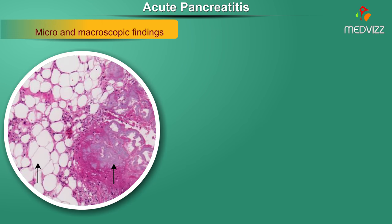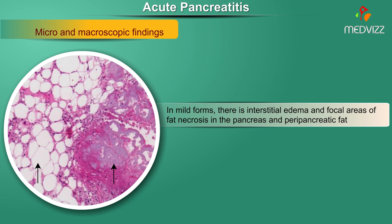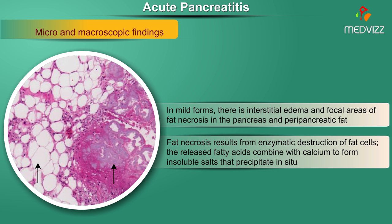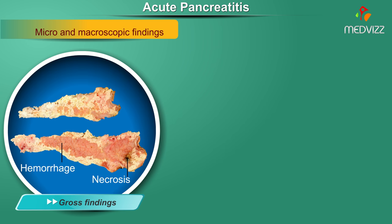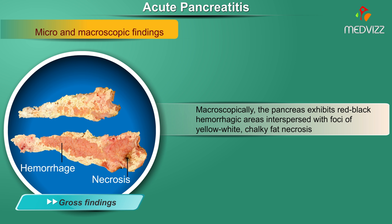Microscopically, in mild forms there is interstitial edema and focal areas of fat necrosis in the pancreas and peripancreatic fat. Fat necrosis results from enzymatic destruction of fat cells; released fatty acids combine with calcium to form insoluble salts that precipitate in the pancreas. Macroscopically, the pancreas exhibits red-black hemorrhagic areas interspersed with foci of yellow-white chalky fat necrosis.